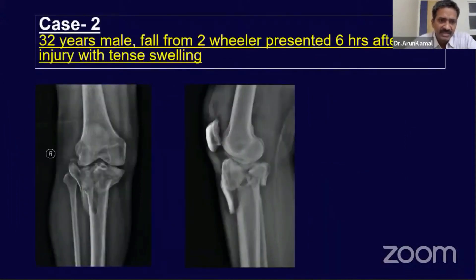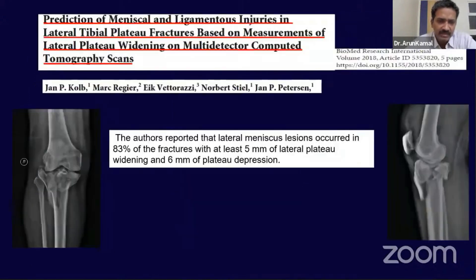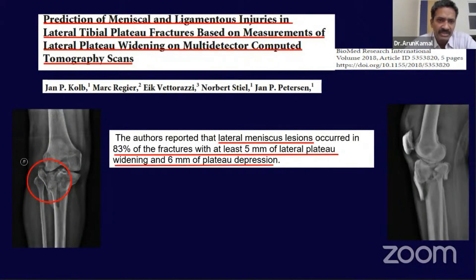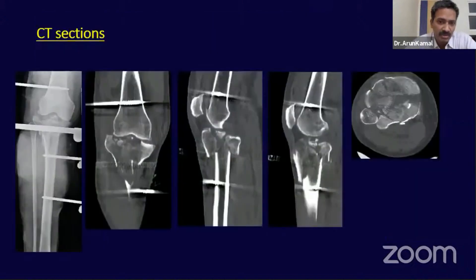My second case is a 32-year-old male who had a fall from a two-wheeler, presenting six hours after injury with tense swelling. Apart from condylar widening and joint depression, there was a subluxation of the lateral condyle fragment. Literature indicates that in 83% of fractures with at least 5 mm of lateral tibial widening and more than 6 mm of plateau depression, meniscal impingement is encountered.